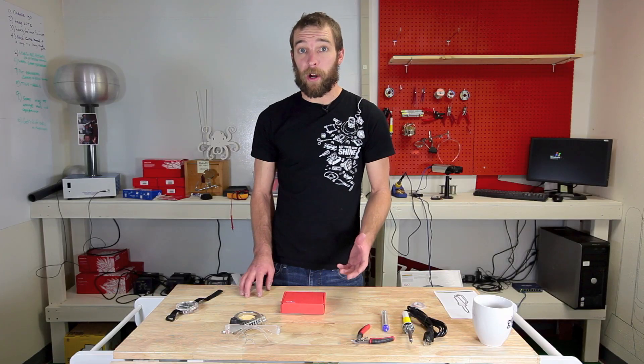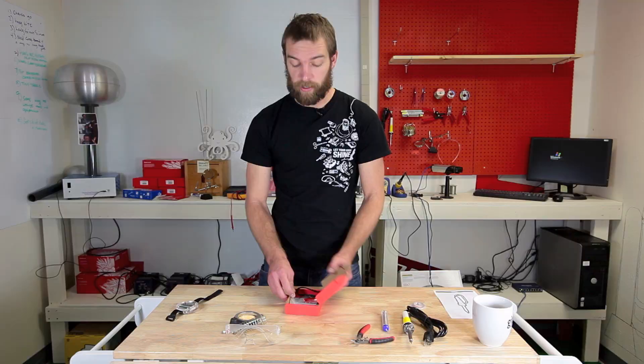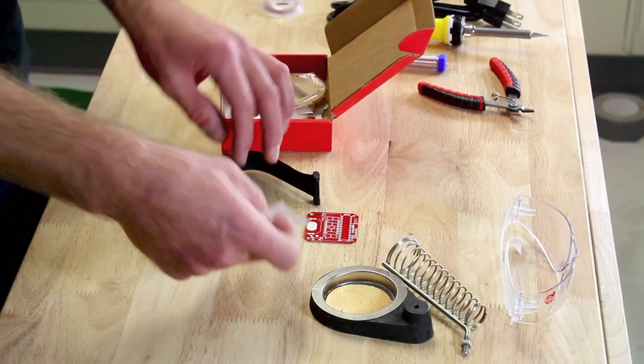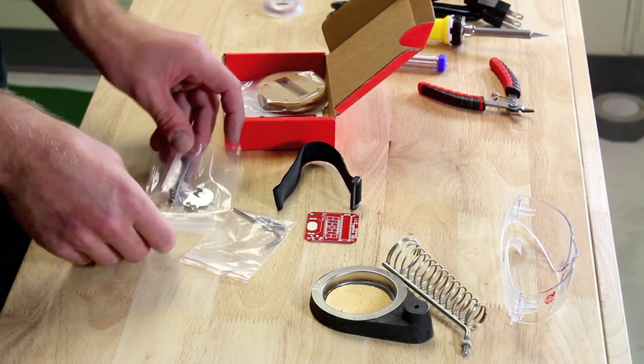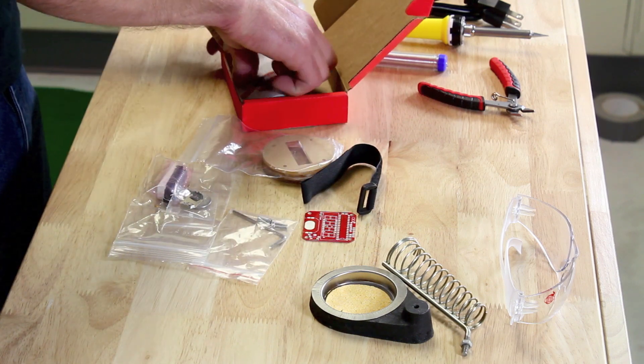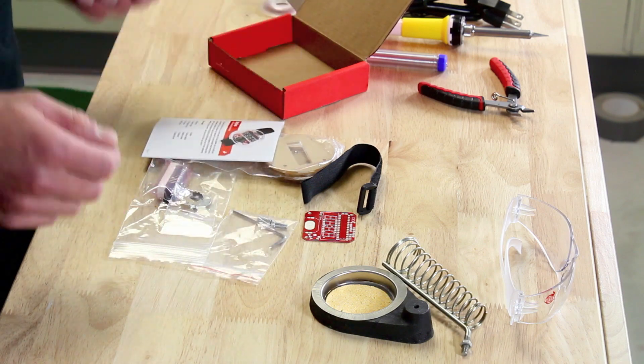Now let's open the smaller box and see just the components for the big time watch kit itself. As you can see, we have a red circuit board, we have the watch band, we have some hardware to keep everything together, we have all the components that we'll be soldering onto the circuit board, we have the housing, and step-by-step instructions that will walk us through the actual assembly process.